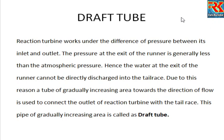The draft tube is used because the reaction turbine works on a difference of pressure. The pressure at the exit of the runner is generally less than atmospheric pressure. Because of this sub-atmospheric pressure at the runner exit, we cannot directly discharge into the tailrace, so we use the draft tube to discharge water into the tailrace.